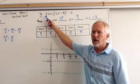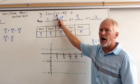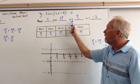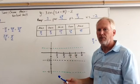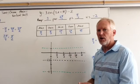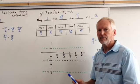What's our amplitude? 3. What's our period? Well, there's a 3 here, so now it's 2 pi over 3. Our phase shift: I set this inside equal to 0. I encourage you to stop the video and see if you get pi over 3.